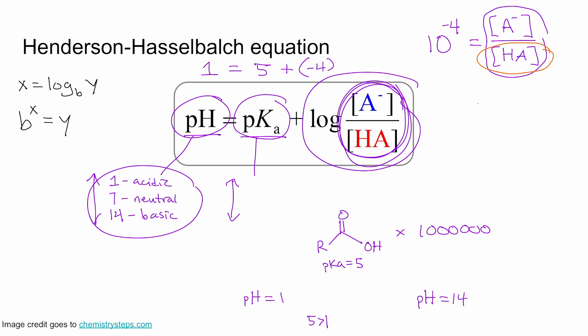To get this number to be very small, the denominator has to be way bigger than the numerator. So that means there's way more protonated carboxylic acid than the deprotonated version. You can also say there's way more acid concentration than base concentration.